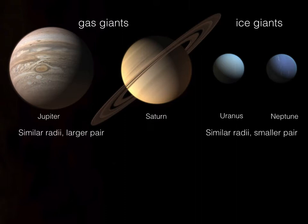The first characteristic is obviously size. In astronomy, we measure sizes by radii — going from the centers of the planets out to their very edges at the cloud tops. Jupiter and Saturn are similar in radius to one another, whereas Uranus and Neptune have similar radii to each other. But both, just by looking at it, are very different from one type of giant to the next.